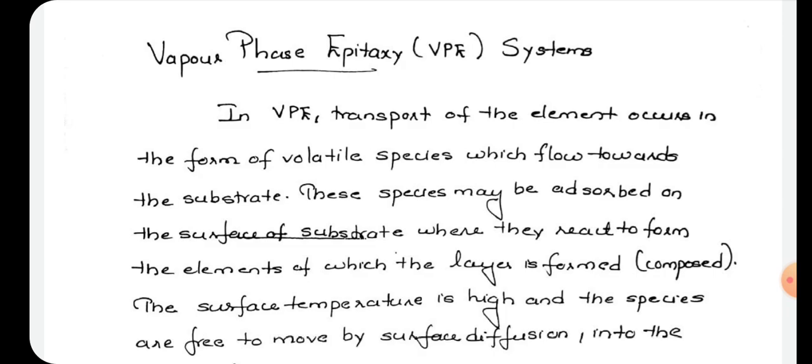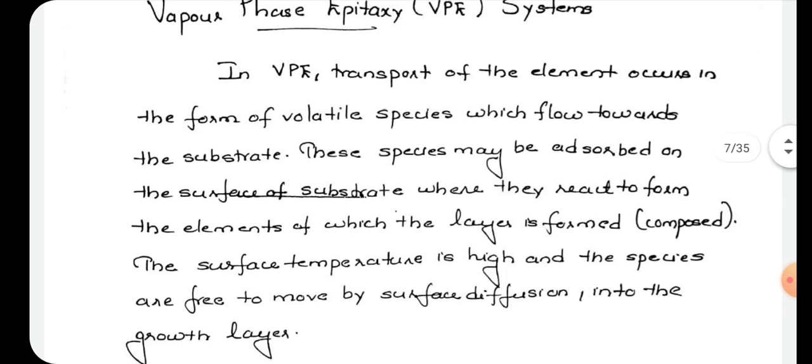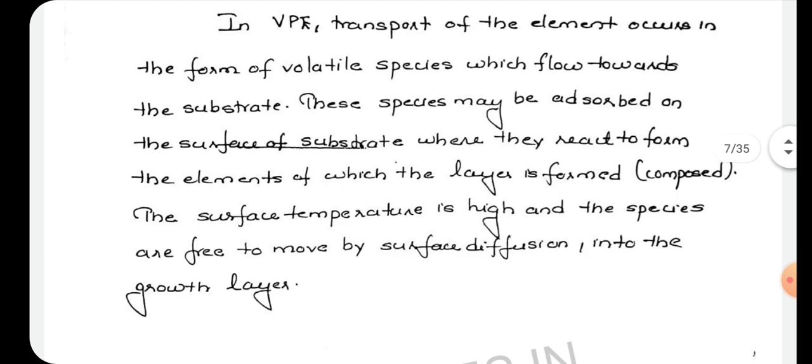In vapor phase epitaxy, transport of the elements occurs in the form of volatile species which flow towards the substrate. These species may be absorbed on the surface of the substrate where they react to form the elements of which the layer is formed. The surface temperature is high and the species are free to move by surface diffusion into the growth layer.